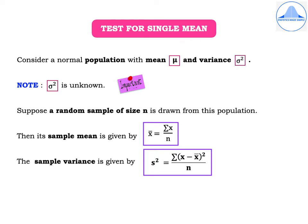Now suppose a random sample of size n is drawn from this population. Then we note that the sample mean is given by x bar equal to summation x divided by small n, and the sample variance is given by s square equal to summation x minus x bar whole square divided by n.